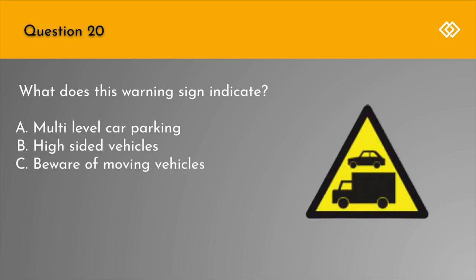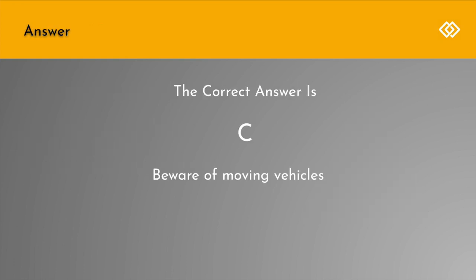Question 20. What does this warning sign indicate? A. Multi-level car parking. B. High-sided vehicles. Or C. Beware of moving vehicles. The correct answer is C: Beware of moving vehicles.